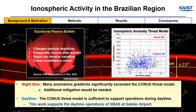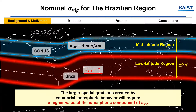Results from previous work suggested that existing assets for the CONUS ionospheric threat model are sufficient to support operations during daytime. So we focus on the daytime operations of GBAS at Galeão Airport in Brazil. While additional ionospheric mitigation is needed during nighttime hours, the nominal sigma-vig over Brazil should be assessed to reflect low-latitude ionospheric conditions.